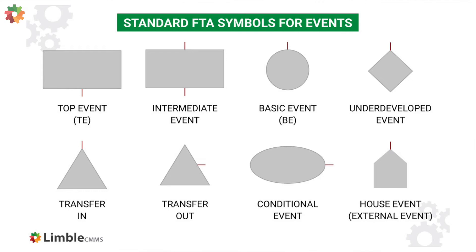Transfer events appear when a fault tree is too large to fit on paper; a transfer event can be created to replace one big part of the fault tree with a single symbol. Transfer events are represented by triangles — transfer out events have a triangle with output to the right, while transfer in events have input to the top apex of the triangle. Underdeveloped events appear when there is insufficient information to develop a sub-tree and are represented by the diamond or rhombus symbol. Conditional events act as a condition for an inhibit gate and are represented by an oval symbol. And lastly, house events are external events that are normally expected to occur and are represented by a house shape.